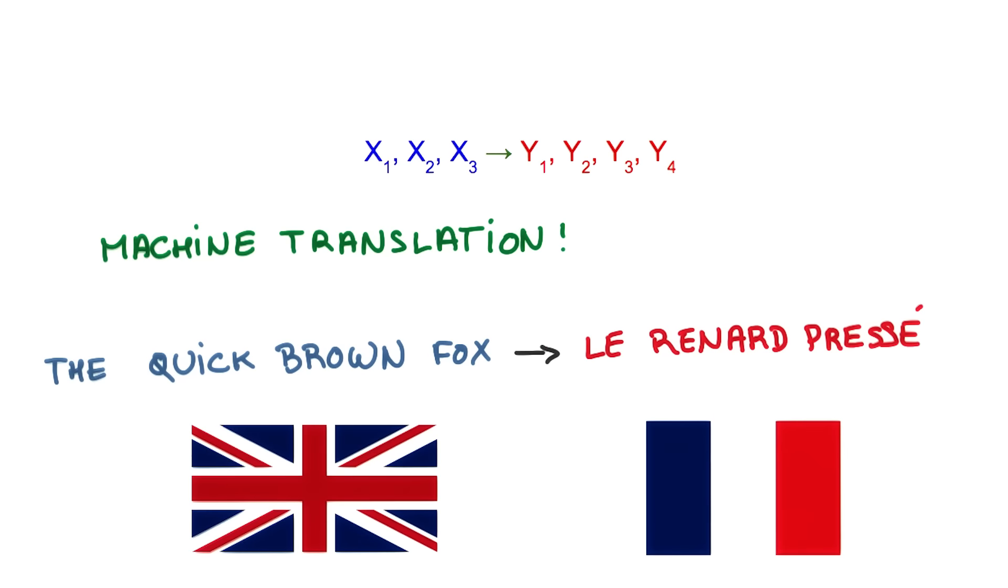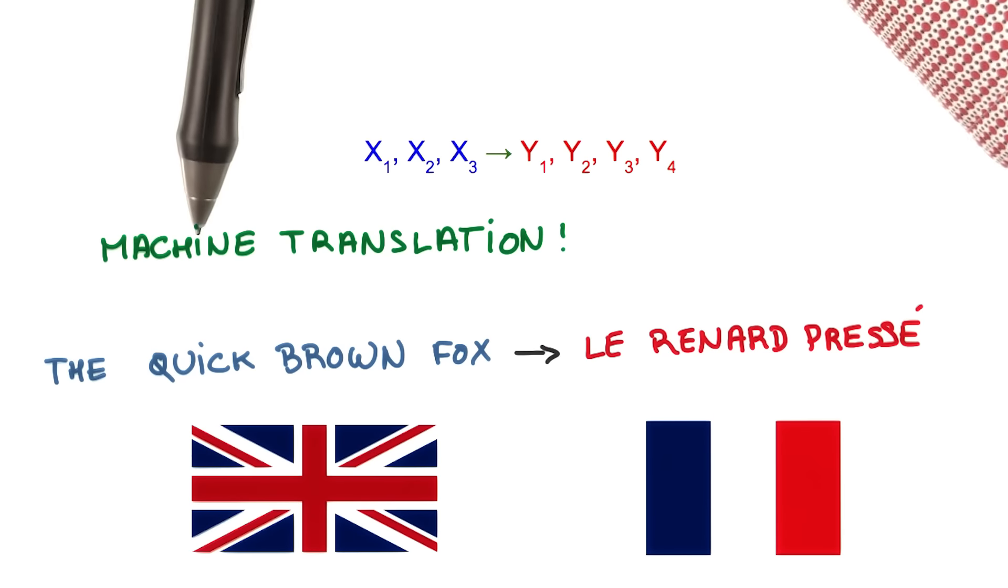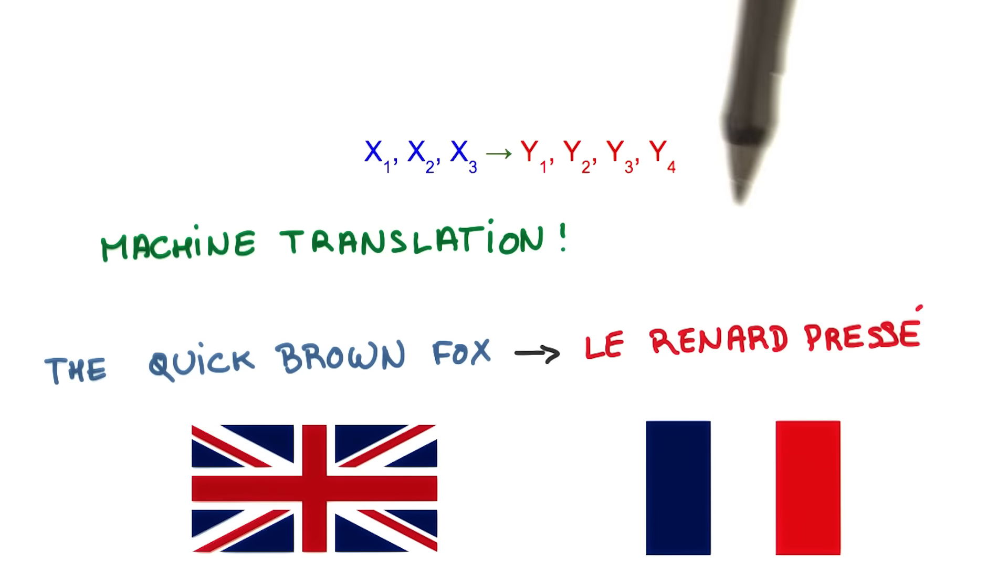What can you do with this? Many things. Imagine that your input is a sequence of English words, and you output a sequence of French words. You've just built a machine translation system. All you need is some parallel text.